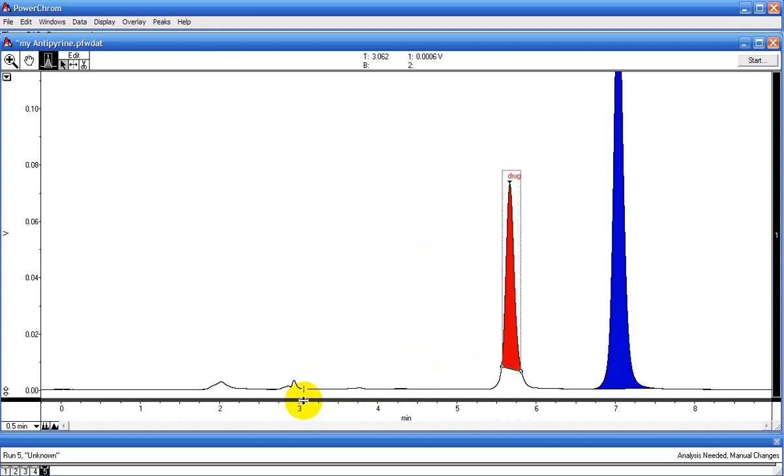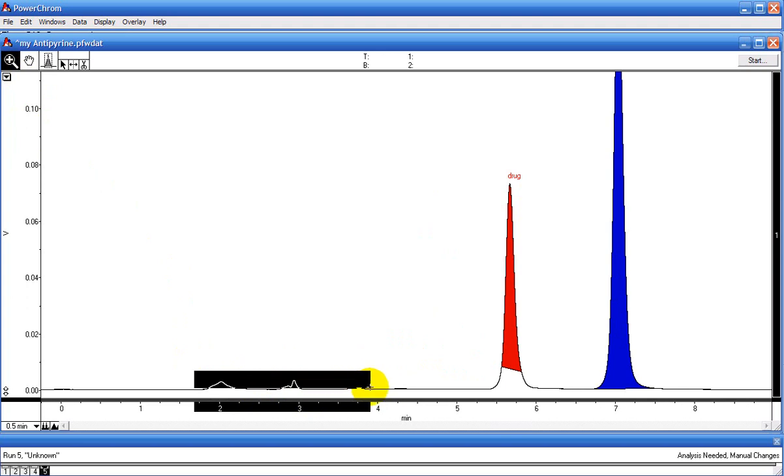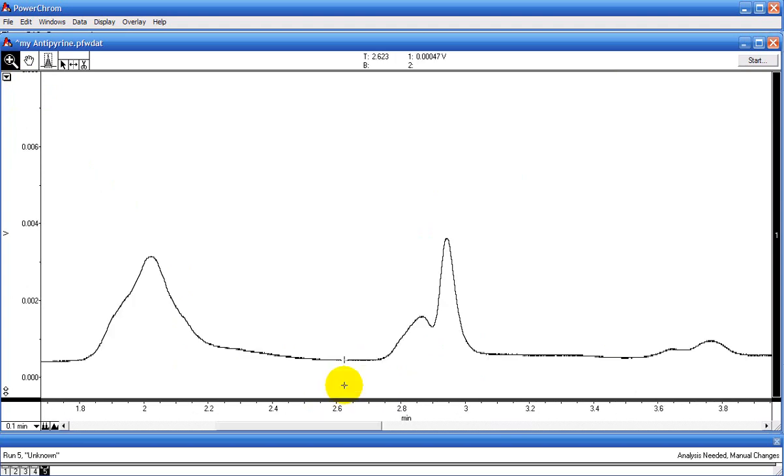If I want to add a peak, for example, if I want to integrate these peaks down here, I can zoom into them by drawing a black square around them and double clicking in the box. And here I can click add, click and hold the left mouse button and draw my baseline. So now I have a new peak.